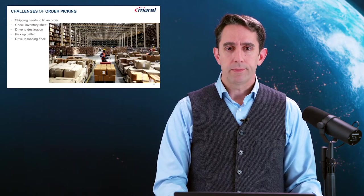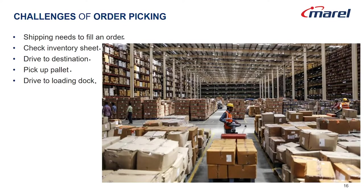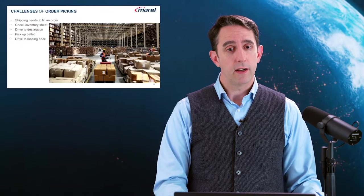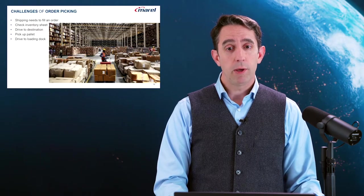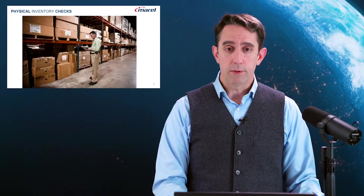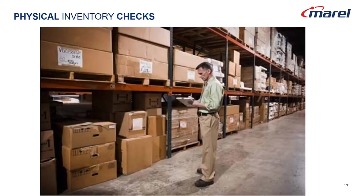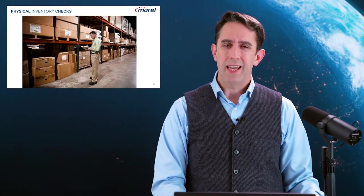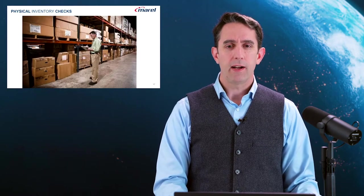Shipping needs to find the product. They drive to where they think the product is — and what if it's not there? How much extra time does it take to find the correct product, and when they find it, did they pick the right pallet? For physical inventory, the crew gets clipboards and pens and counts everything. Did they count the wrong aisle? Was there any double counting? How many hours does it take to reconcile the documents, and even then, is it accurate enough?